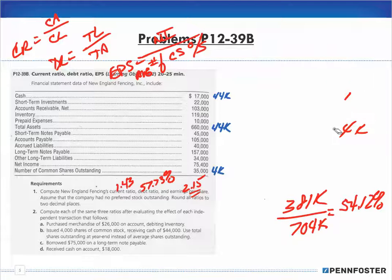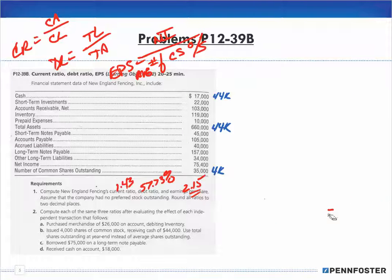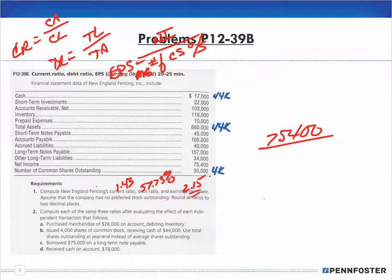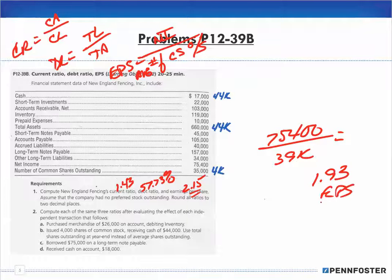Earnings per share for Transaction B: net income is still 75,400, but now shares outstanding are 35,000 + 4,000 = 39,000. So 75,400 divided by 39,000 gives an EPS of 1.93.